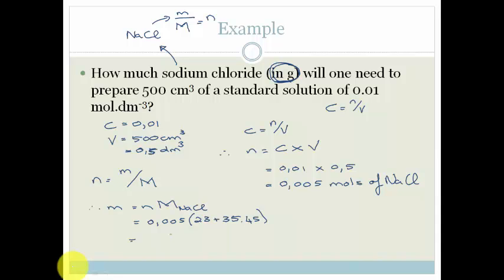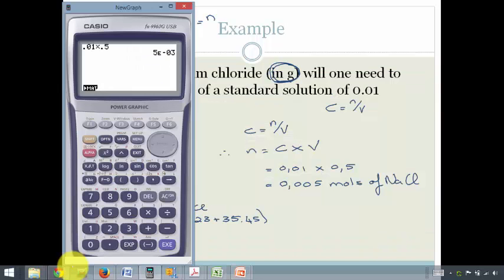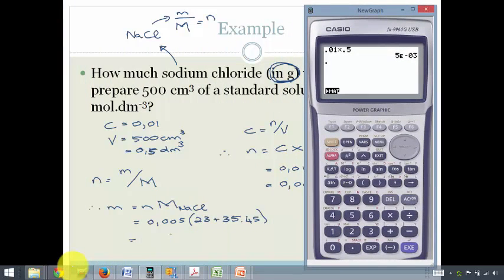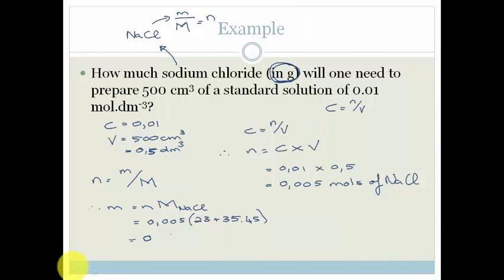And again now we can just pop that into our calculator. Let me take it over to the side so we can see what we're doing. We've got 0.005 times by 23 plus 35.45, close the bracket. And it gives us 0.29. And what is this measured in? It's measured in grams.